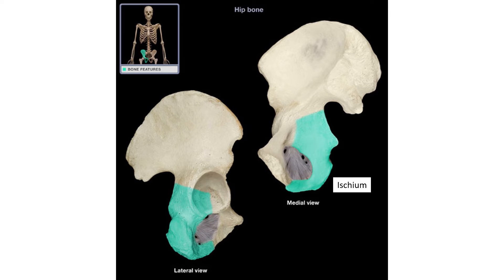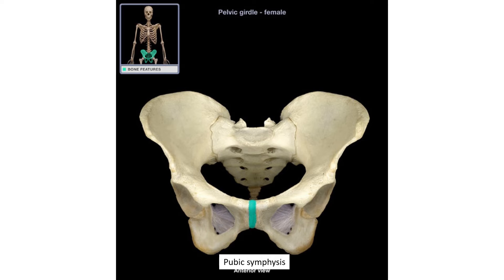The ischium is the posterior and inferior part of the hip bone. The green-colored structure visible is posterior and inferior, large and rough — this is called the ischial tuberosity. The green structure seen in the midline, between the two pubic bones, is called the pubic symphysis.